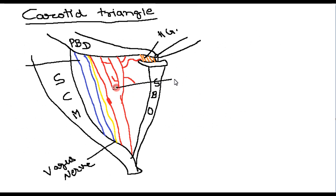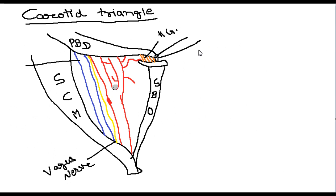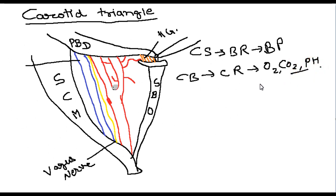There is a small oval structure near the bifurcation of the common carotid artery — this is known as the carotid body. There is also a dilatation at the terminal branch of the common carotid artery known as the carotid sinus. Both are supplied by the glossopharyngeal nerve, vagus nerve, and sympathetic chain. The carotid sinus acts as a baroreceptor and helps in the regulation of blood pressure. The carotid body acts as a chemoreceptor — it responds to the O2 level, CO2 level, and pH level of the blood.